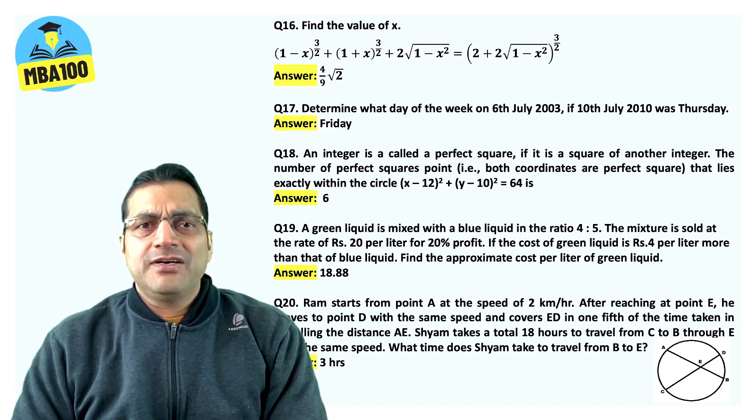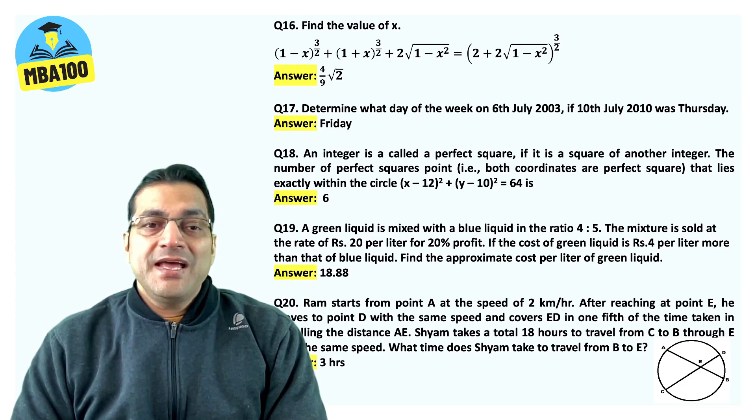Integer is called a perfect square. Answer is six such points. Green liquid. Answer is 18.88.